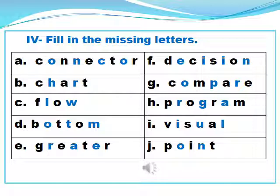The missing letters are I, U, L and the correct word is visual. The missing letters are J, O, N and the correct word is point.